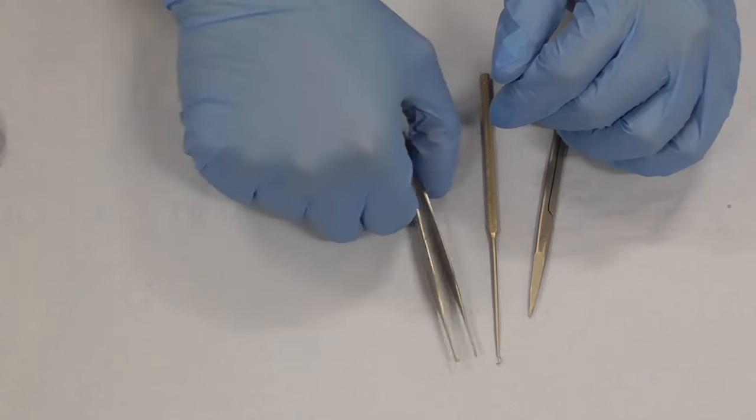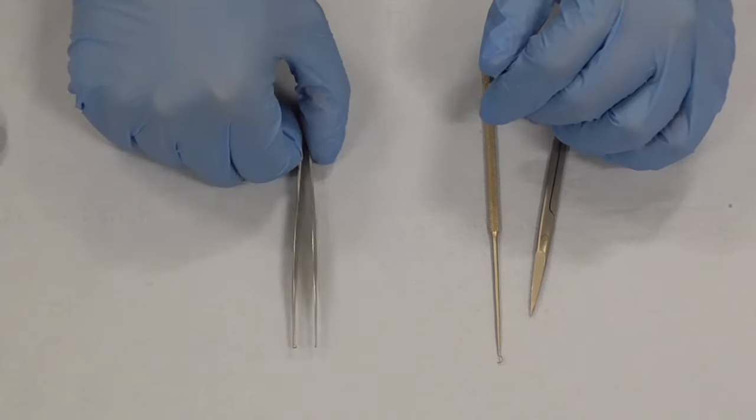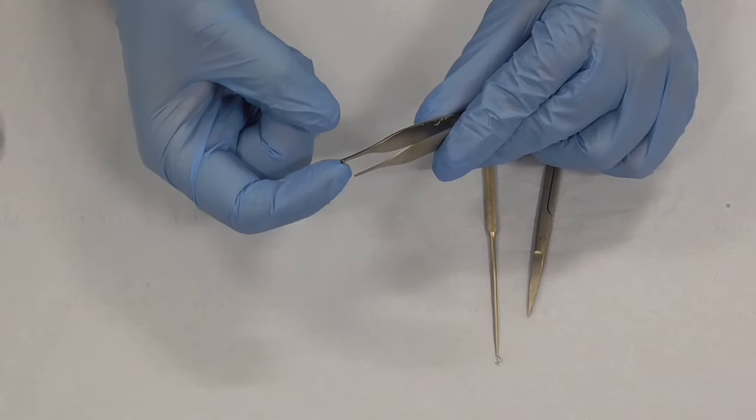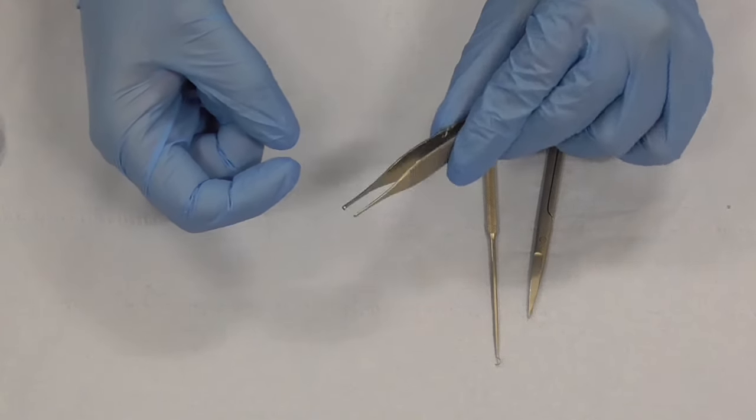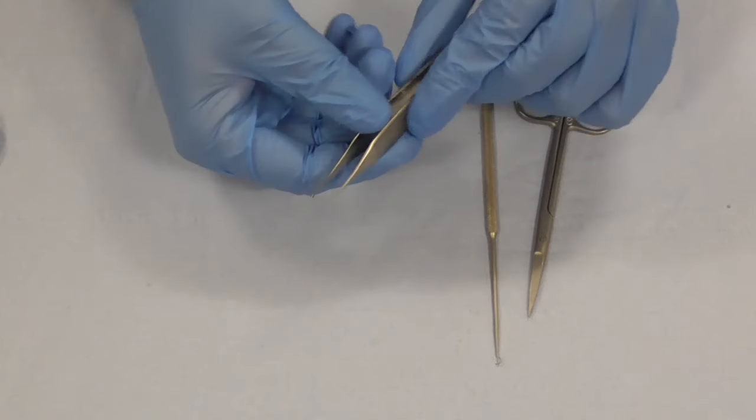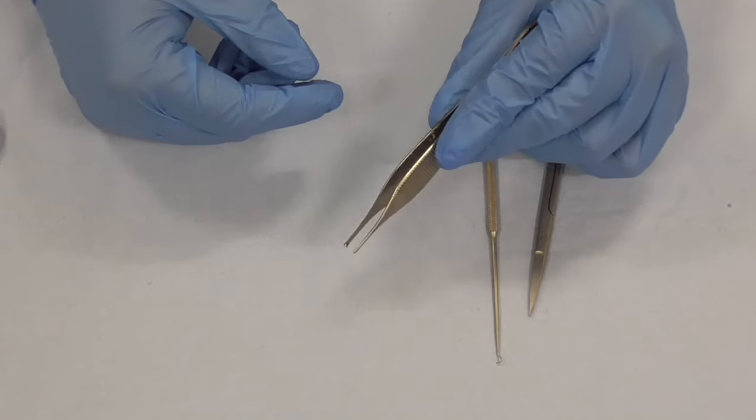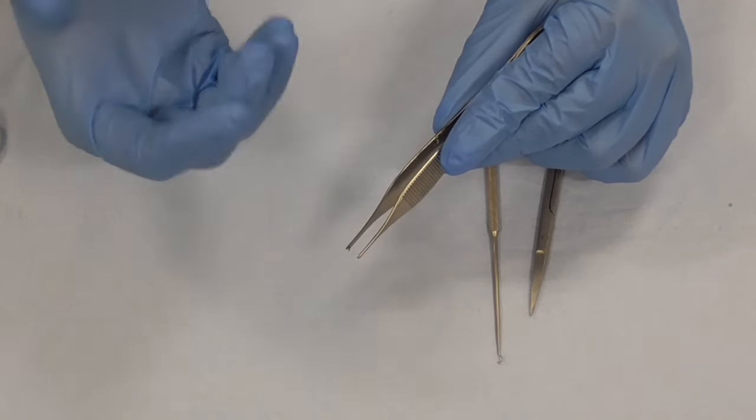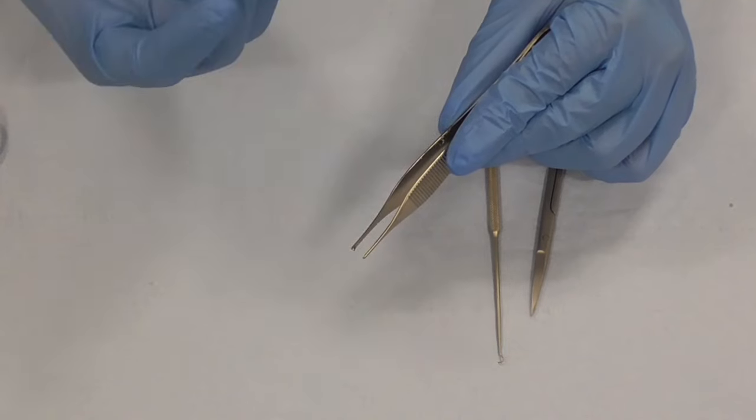The next bit of kit we have is our dissecting forceps and this is a toothed dissecting forceps meaning it's got teeth and the purpose of teeth is to be able to grasp tissue. And whilst that's good you've got to remember that the tissue you're suturing is going to be live tissue and it can be quite friable, it can be vulnerable to injury.